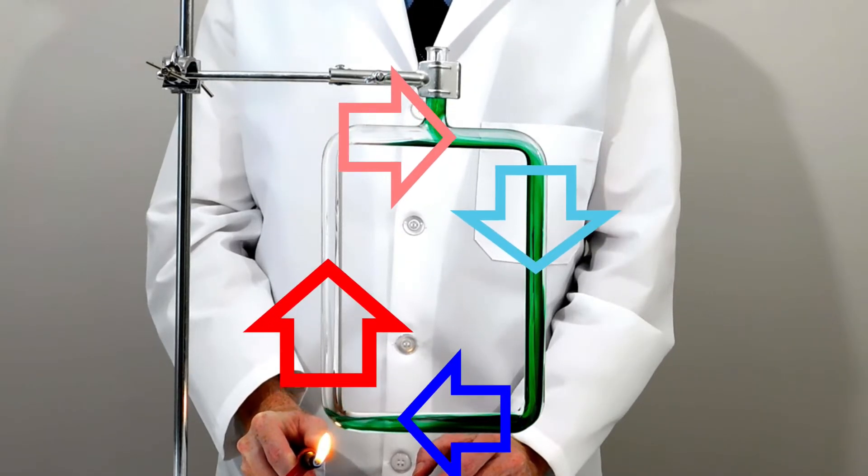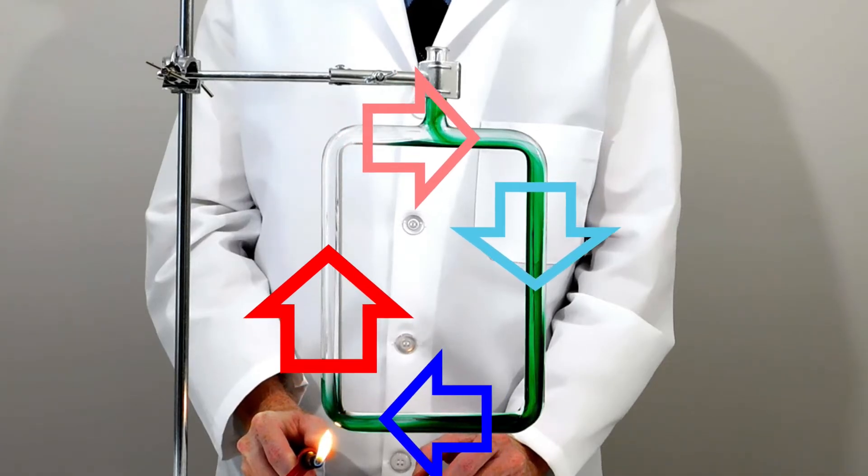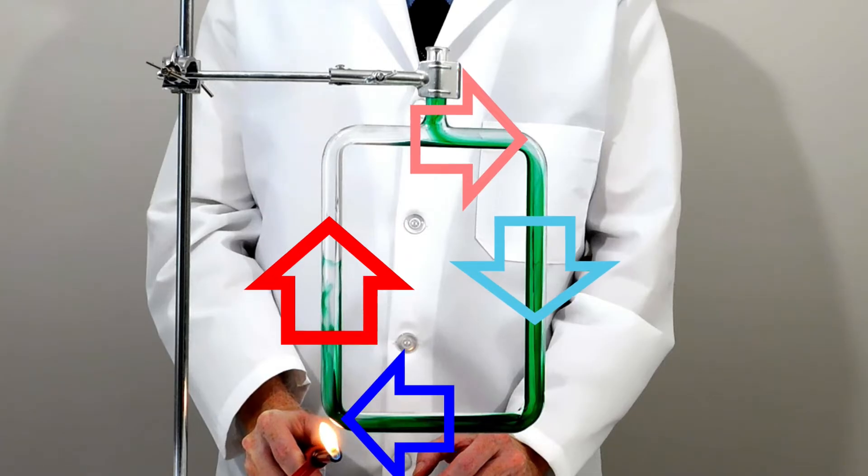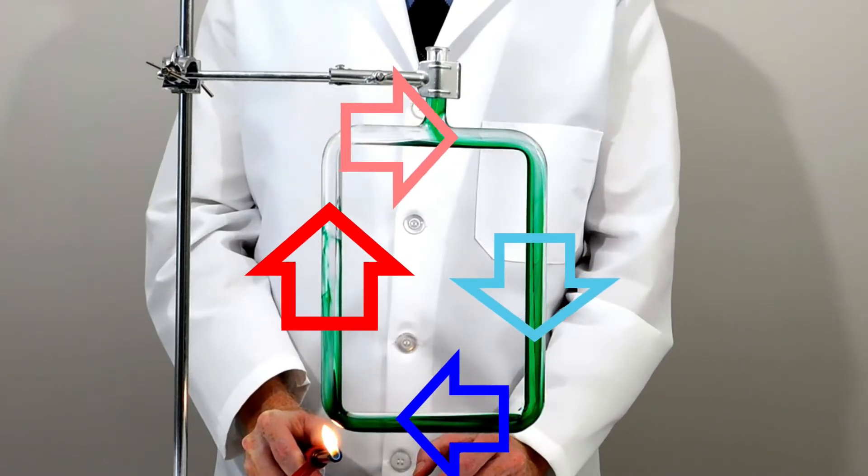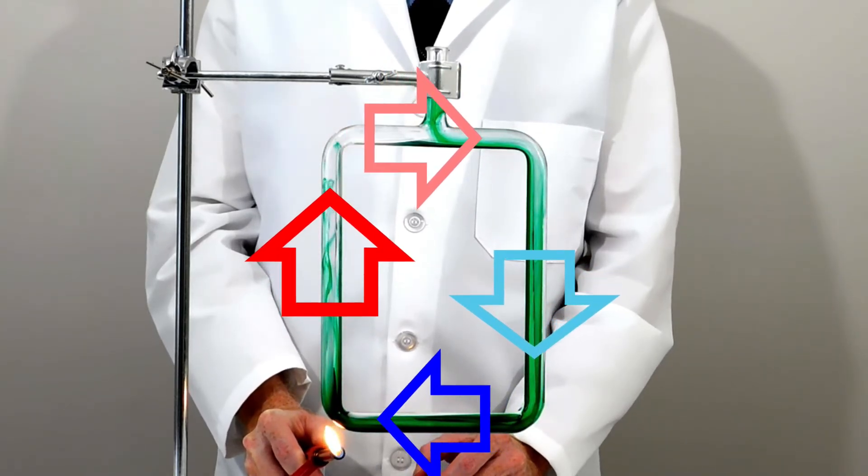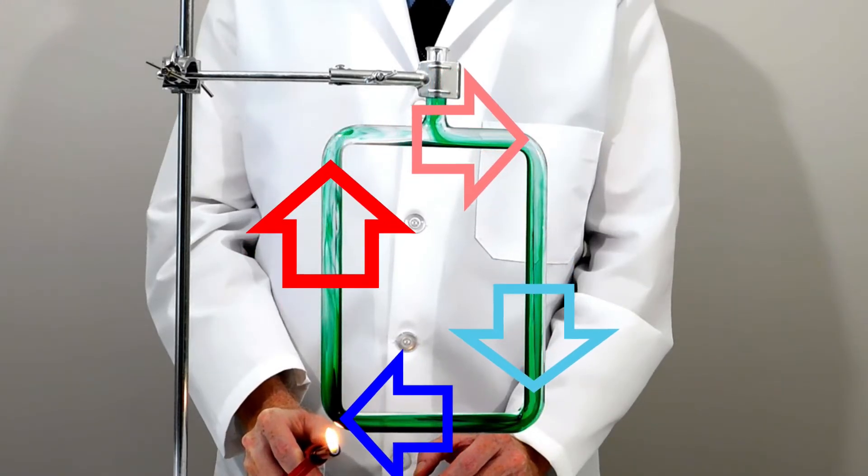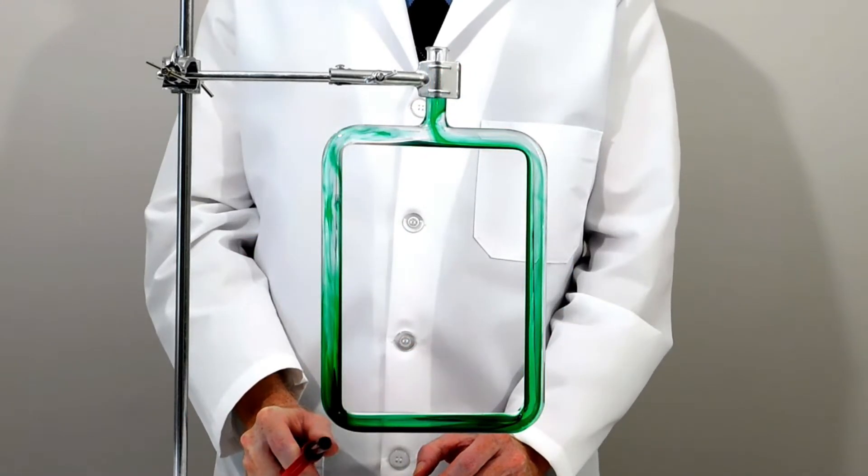As the hottest fluid in this tube rises from this corner, that creates an opening for cooler fluid along the bottom horizontal part to take its place. And as the hot fluid rises, it also pushes on the warm fluid in the top horizontal segment. Together, these actions create a flow that we call a convection current.